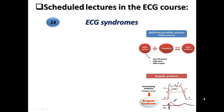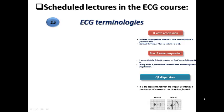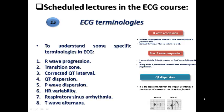We are going to have a lecture regarding ECG syndromes — Wolff-Parkinson-White syndrome, J-wave syndromes, long QT syndrome, short QT syndrome, and LGL syndrome — covering ECG features of each and how to diagnose them. Also, a lecture on ECG terminologies covering terms commonly used in interpretation, such as R-wave progression, transition zone, corrected QT, and QT dispersion — understanding what each terminology means.